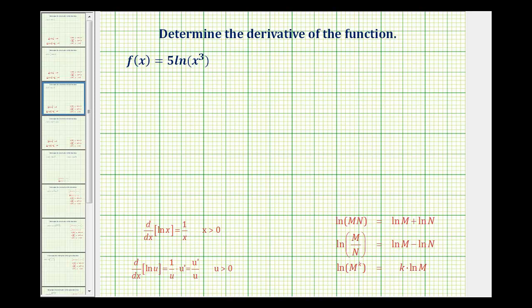Welcome back to some more derivatives involving the natural log function. Here we have f(x) = 5ln(x³).